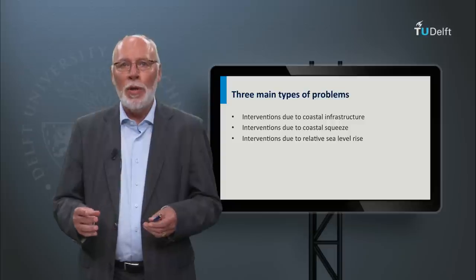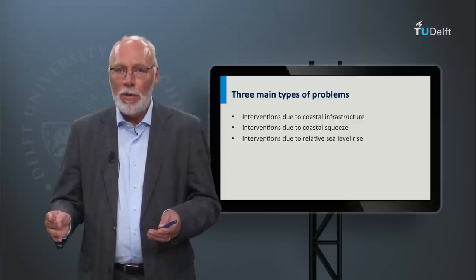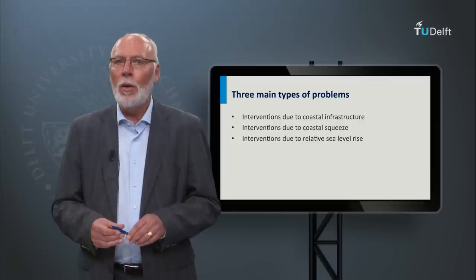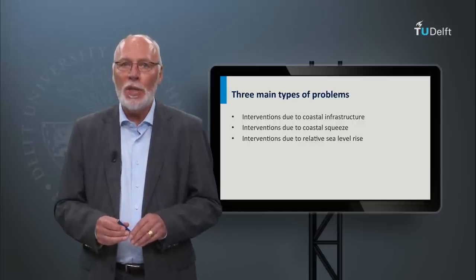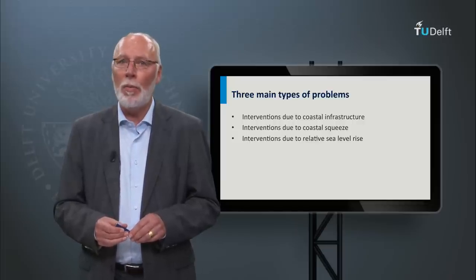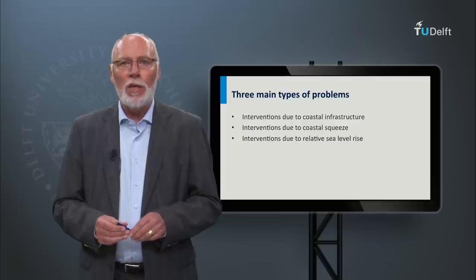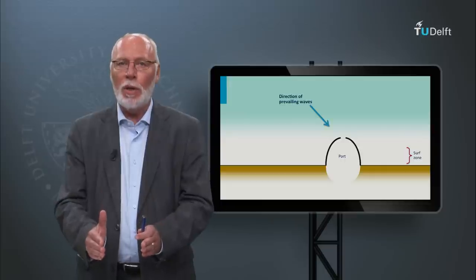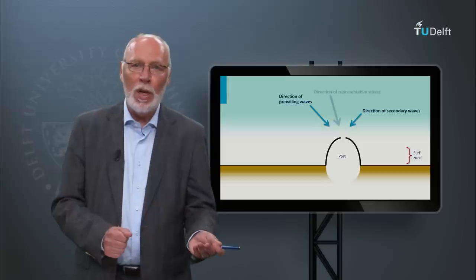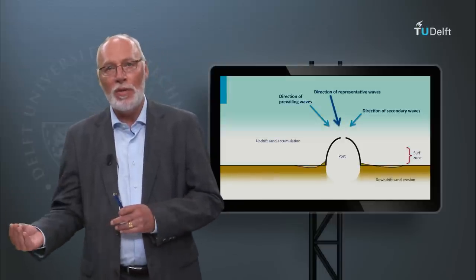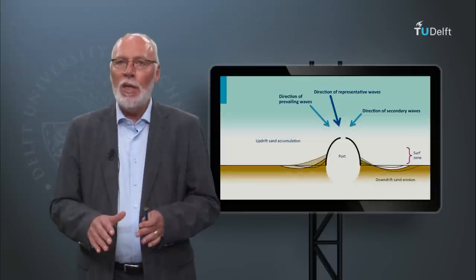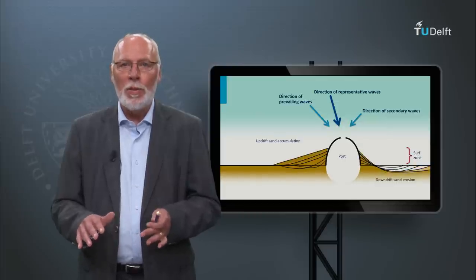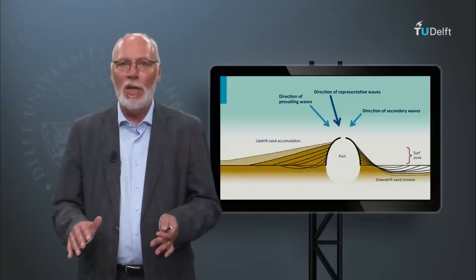As we have learned from the module on water systems and coasts, there exists an alongshore river of sand. Coastal infrastructure that interrupts this river of sand can cause coastal problems. If we construct a harbour, we block the alongshore transport, which results in accretion on the updrift side and erosion on the downdrift side. This is an important problem that occurs at many coasts, and a large part of engineering problems originates from this.